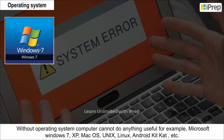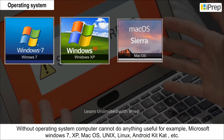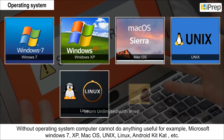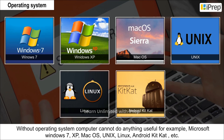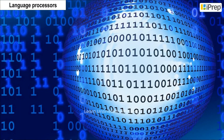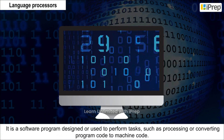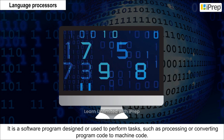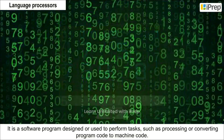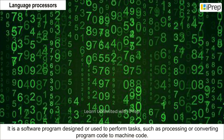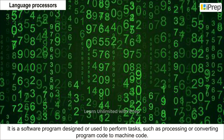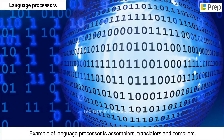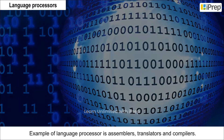Examples of operating systems include Microsoft Windows 7, XP, Mac OS, Unix, Linux, and Android KitKat. The next category is language processors — software programs designed to perform tasks such as processing or converting program code to machine code.